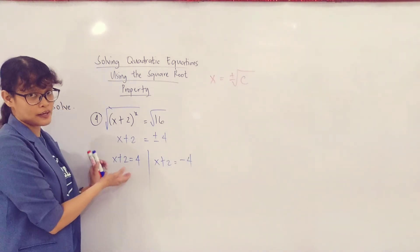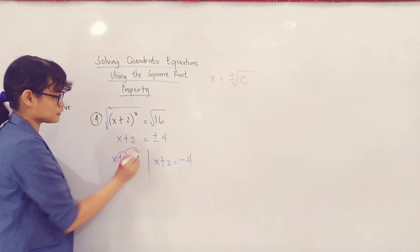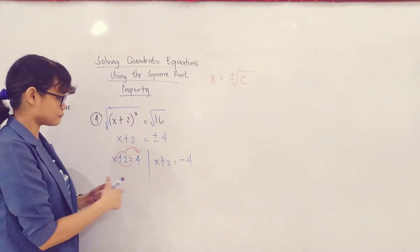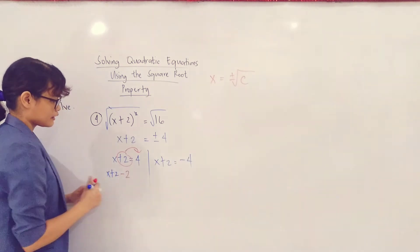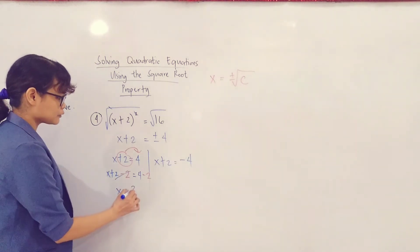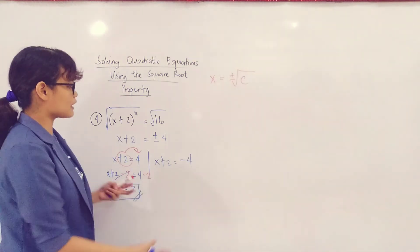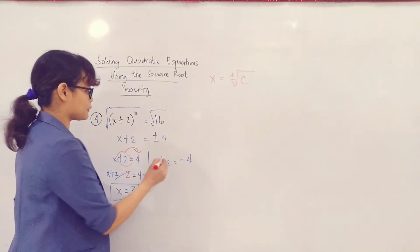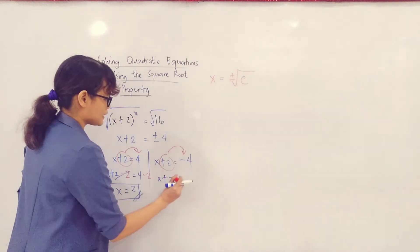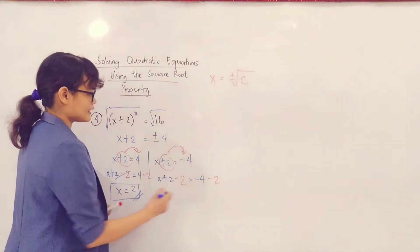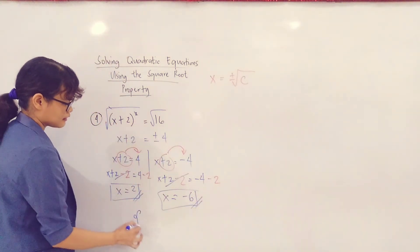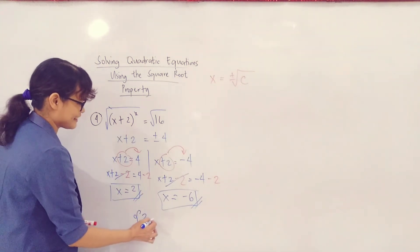So for you to be able to get the first value of x, simply transpose this one to the other side. Since this is a positive sign, you're going to apply SPE. So you'll have x plus 2 minus 2 equals to 4 minus 2. So 2 minus 2 is already equal to 0, then you'll have x. 4 minus 2 is equal to 2. Therefore, the first value of x is 2. And the same thing for the second value of x — again, transpose the constant number 2 to the other side, use SPE. So you'll have x plus 2 minus 2 equal to negative 4 minus 2. So x equals to negative 4 minus 2 which is equal to negative 6. Therefore, the solution set is 2 and negative 6.